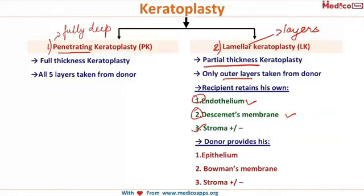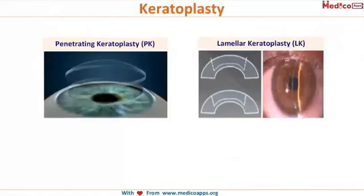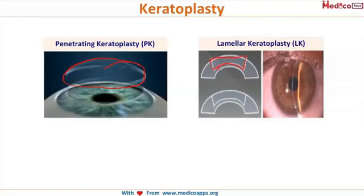This picture shows penetrating keratoplasty versus lamellar keratoplasty. In the first picture, the entire corneal thickness is removed and the donor's cornea is placed. In the second picture, only certain layers are removed and the underlying layer remains — that is lamellar keratoplasty.